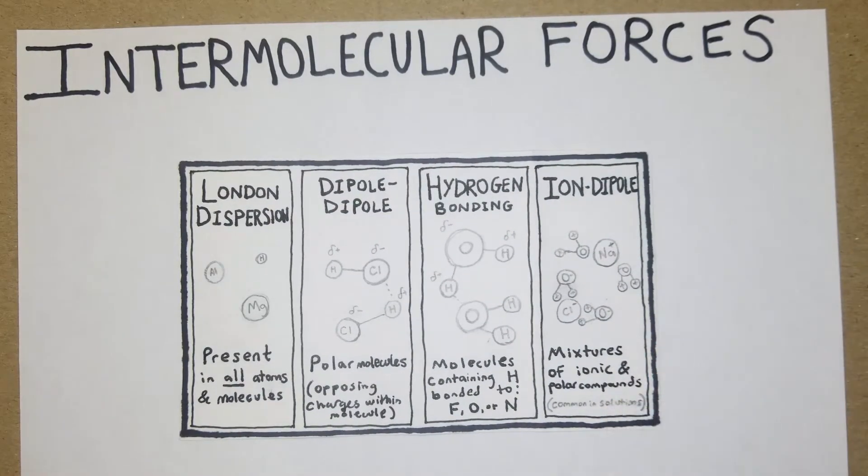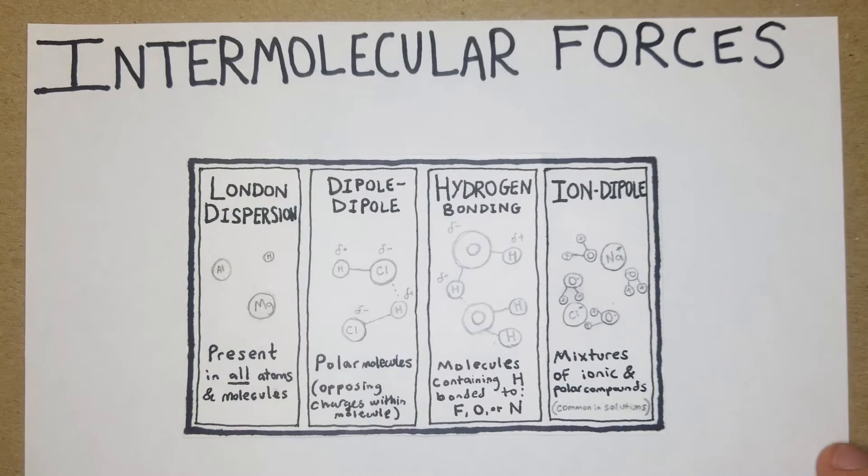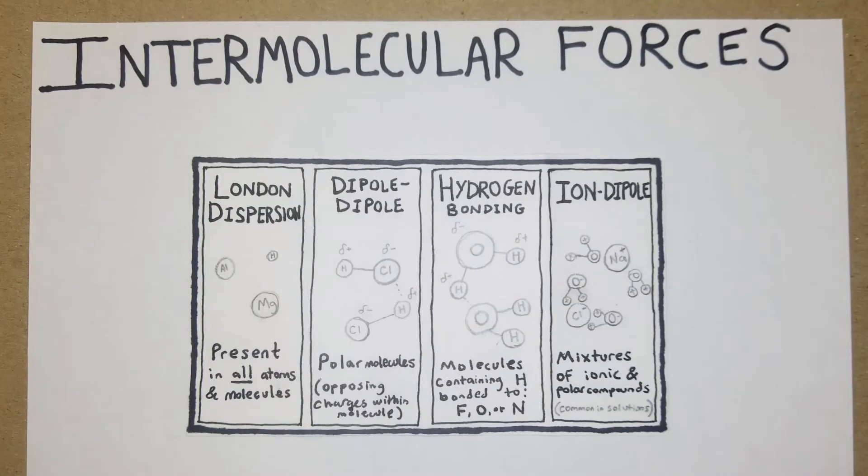Some of the important things to know here are the order of strength - what is the strongest, what's the weakest - and then you want to be able to eventually look at a compound and figure out what types of intermolecular forces it's going to have based on the three-dimensional structure, aka the molecular geometry.